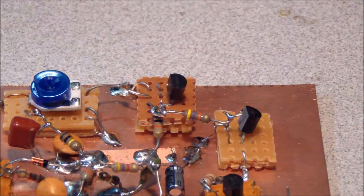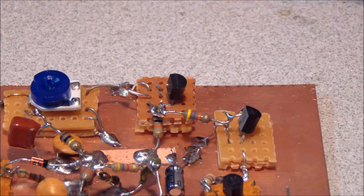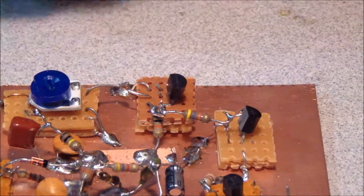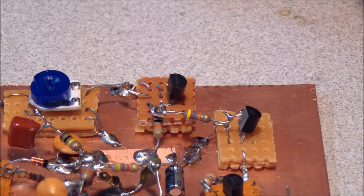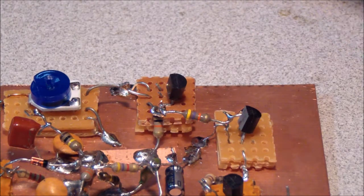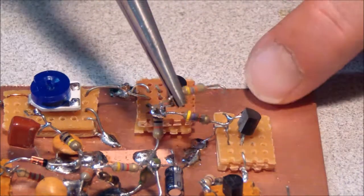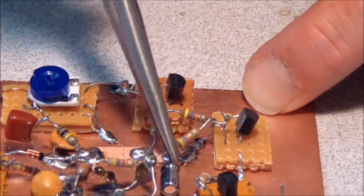We have another 47K resistor, yellow, violet, orange. And this one will go from the base lead to ground.